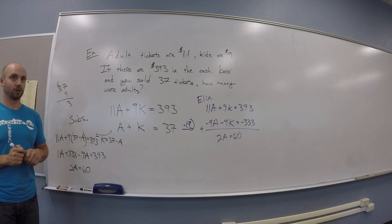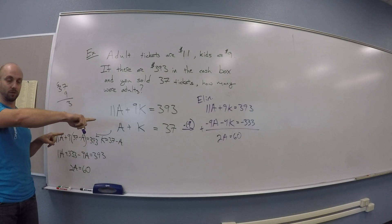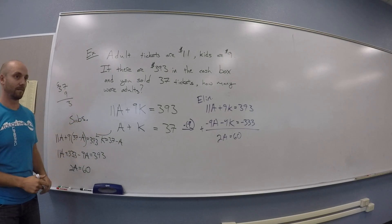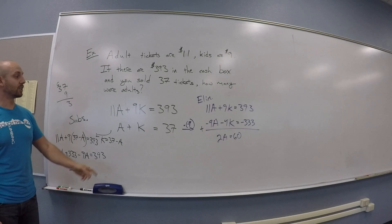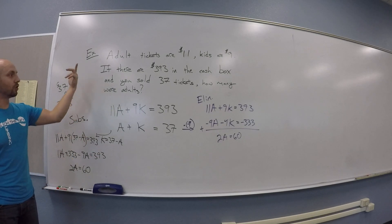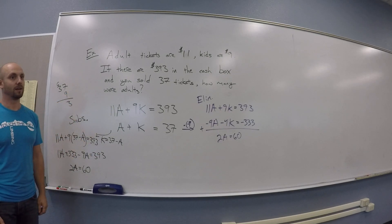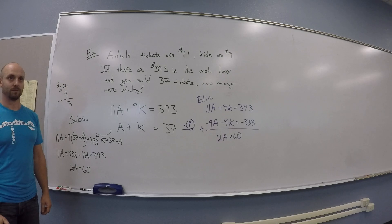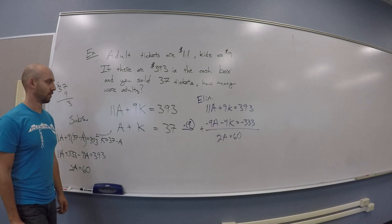You guys good with this? The black over here is called substitution — which is easier but will be less useful in the context we're going into. This is called elimination, which is much more like what we're going to do. The answer is: you sold 30 adult tickets.